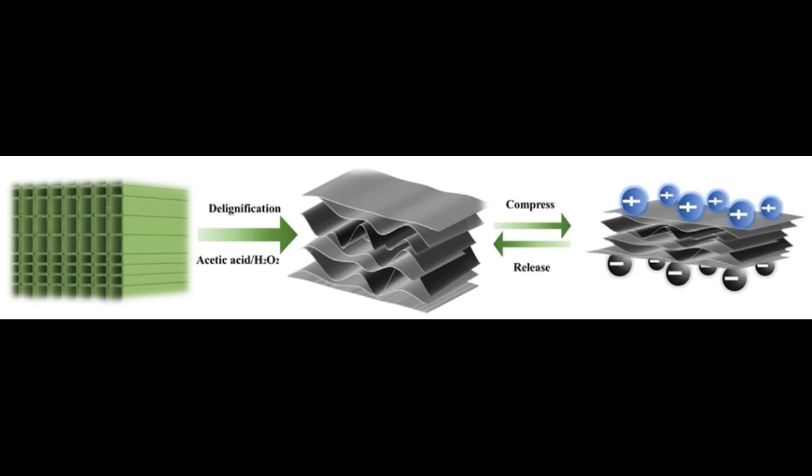Without special treatment, wood is not flexible enough. When subjected to mechanical stress, only a very low electrical voltage is generated in the deformation process. The researchers used a chemical process that is the basis for various refinements of wood – de-lignification.